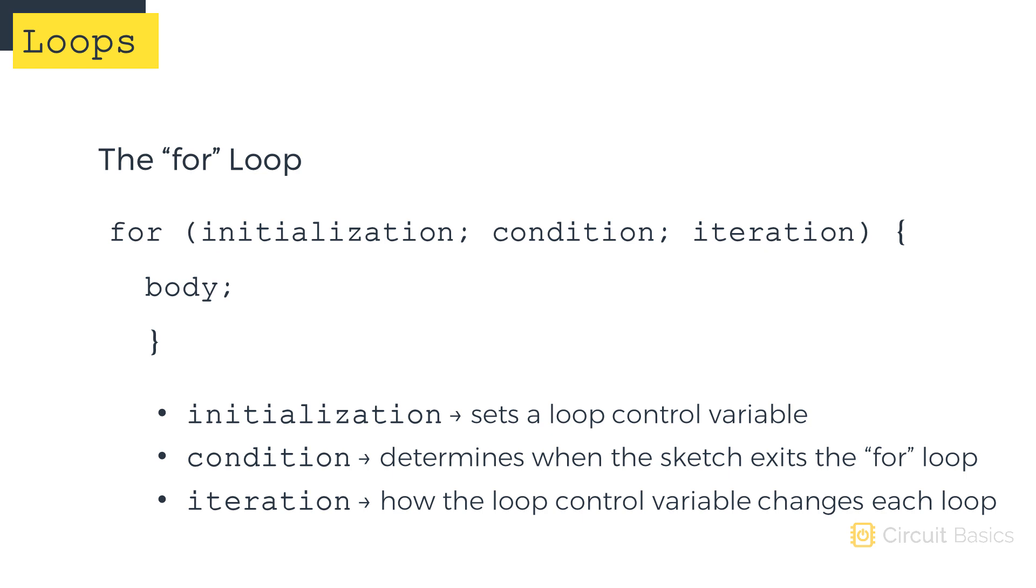The iteration value defines how the loop control variable changes each time the loop is repeated. Any compound operator can be used here. Initialization only happens once, at the first iteration of the for loop.